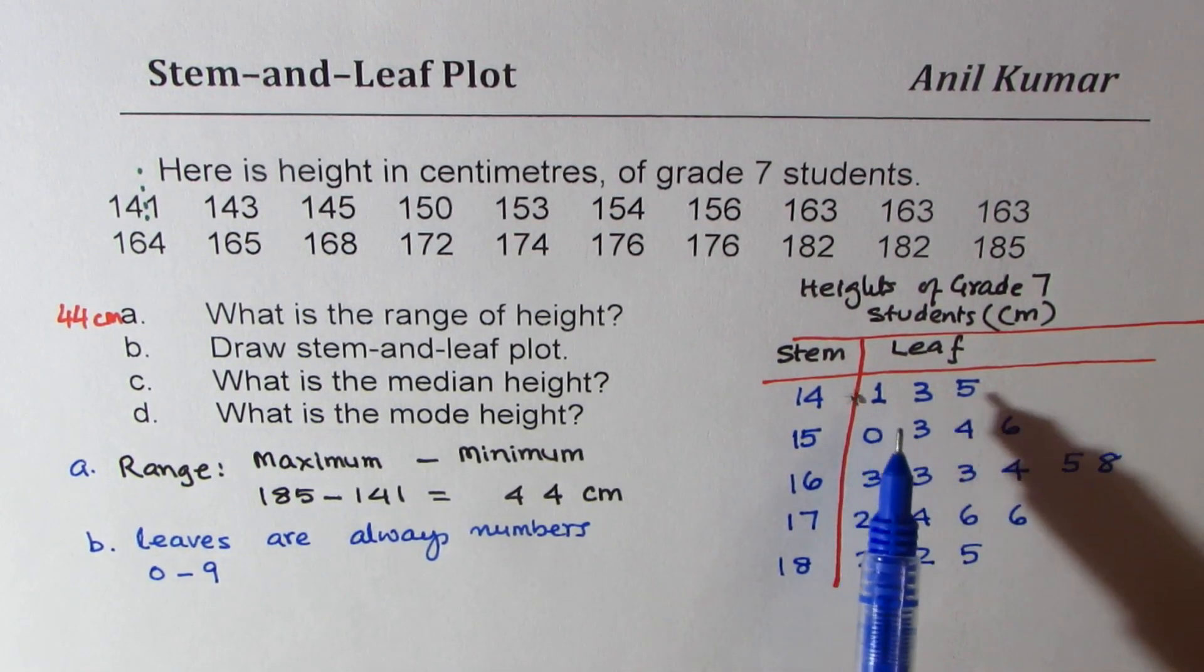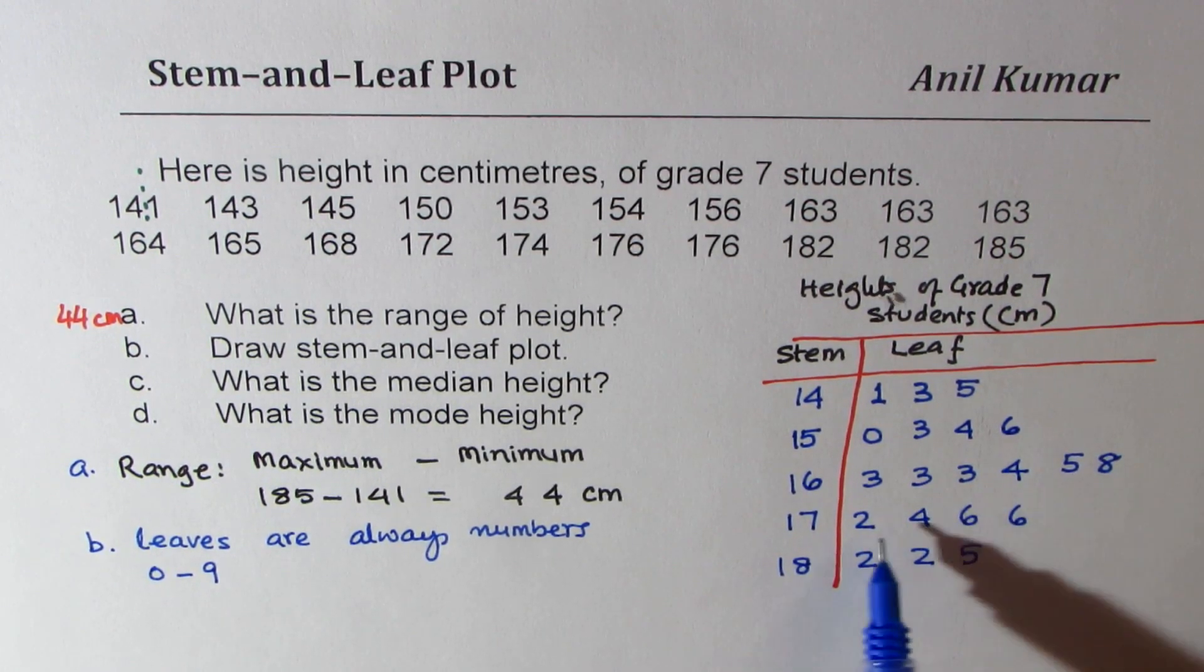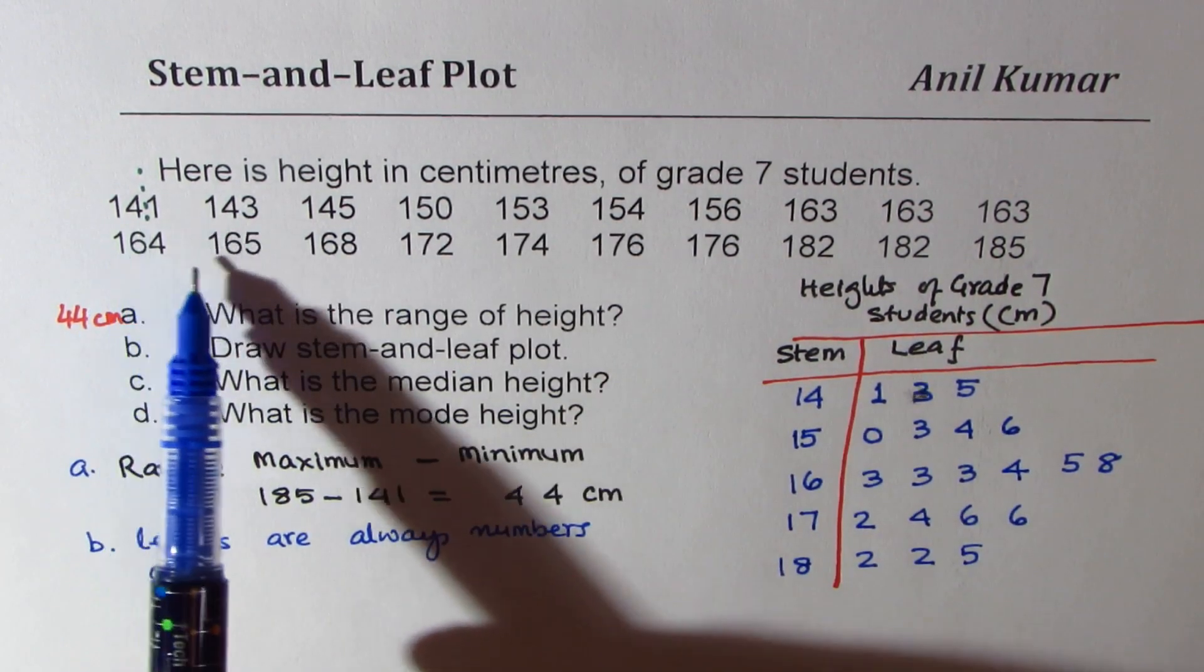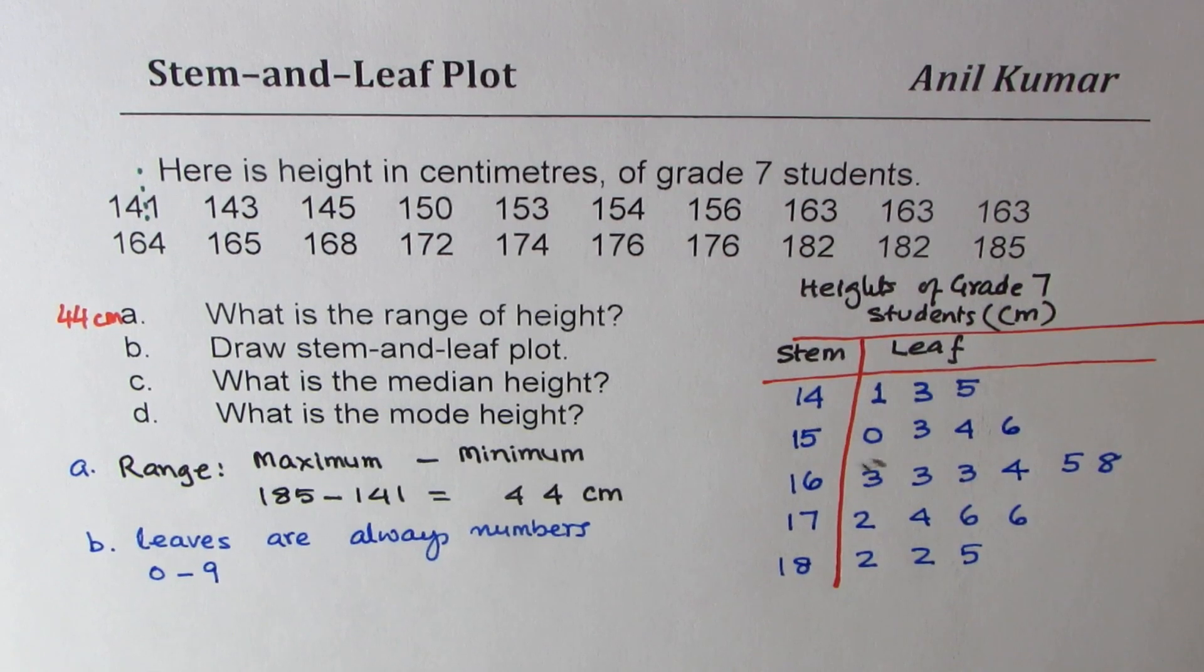So it's a good idea to count. We do have 20 points, 10 and 10. Perfect. So we have included complete information in stem and leaf chart as shown here. That is the stem and leaf part.